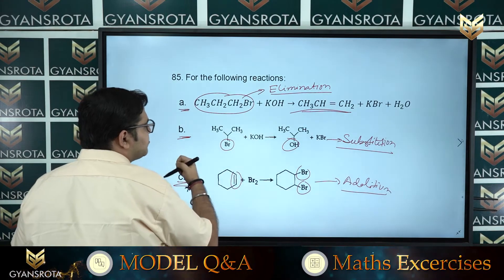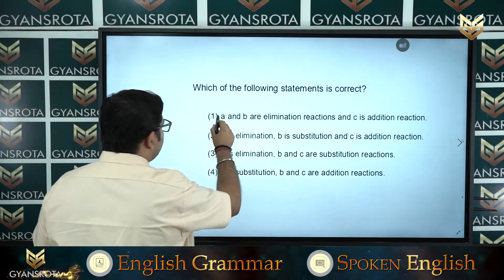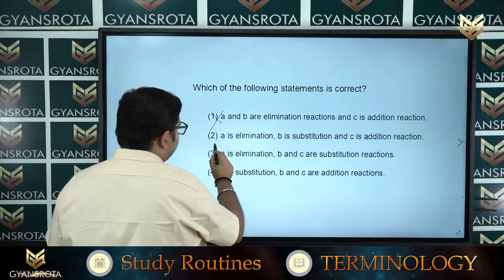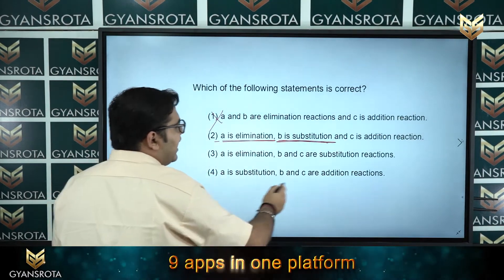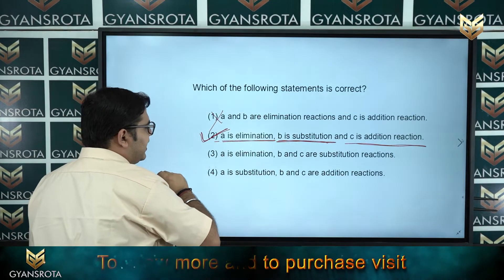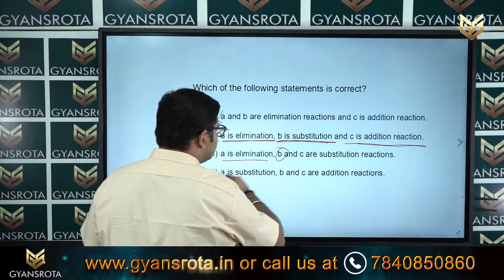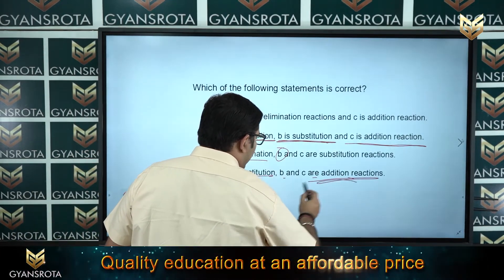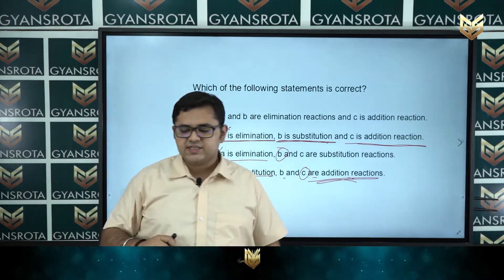Checking the options: option 1 says A and B are elimination — no, only A is elimination. Option 2 says A is elimination, B is substitution, C is addition — yes, all three are true, so option 2 is correct. Options 3 and 4 are inconsistent with our analysis and can be eliminated. Option number 2 is the correct answer of question number 85.